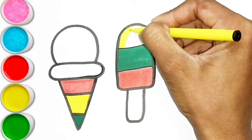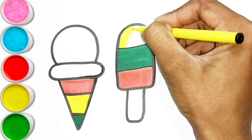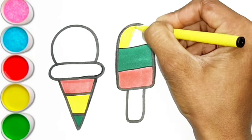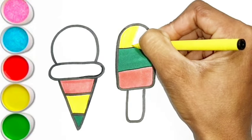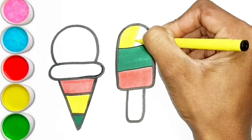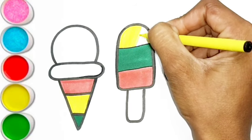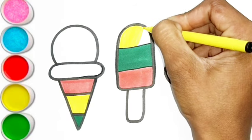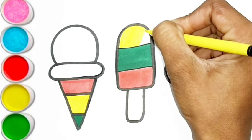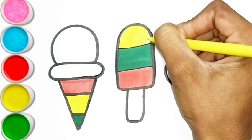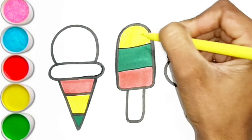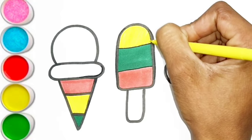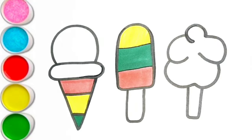S is for sun. S, s, sun. T is for toad. T, t, toad. U is for umbrella. U, u, umbrella.